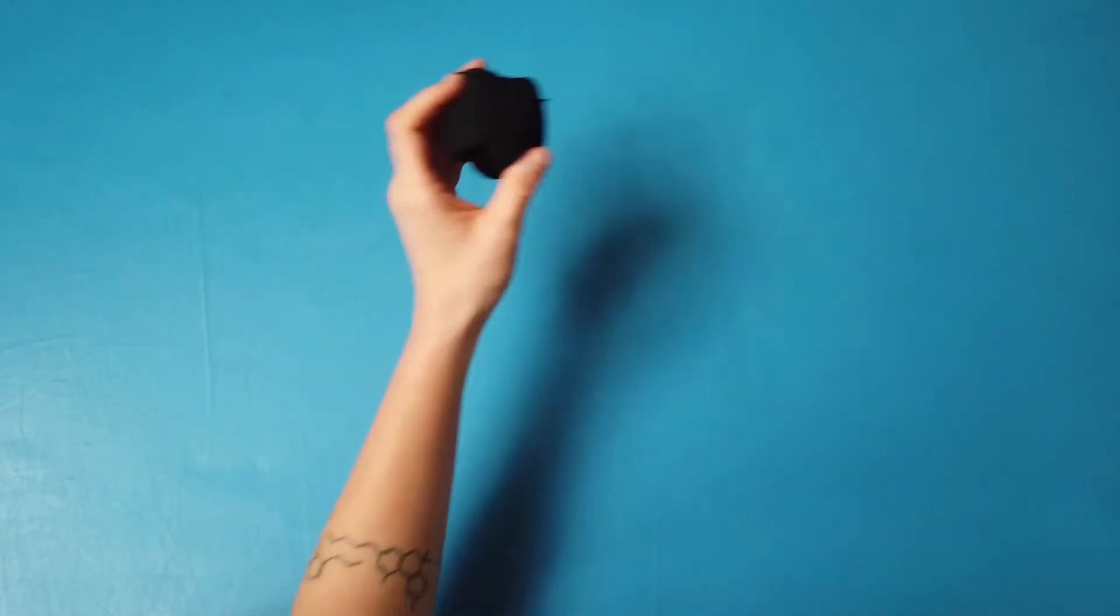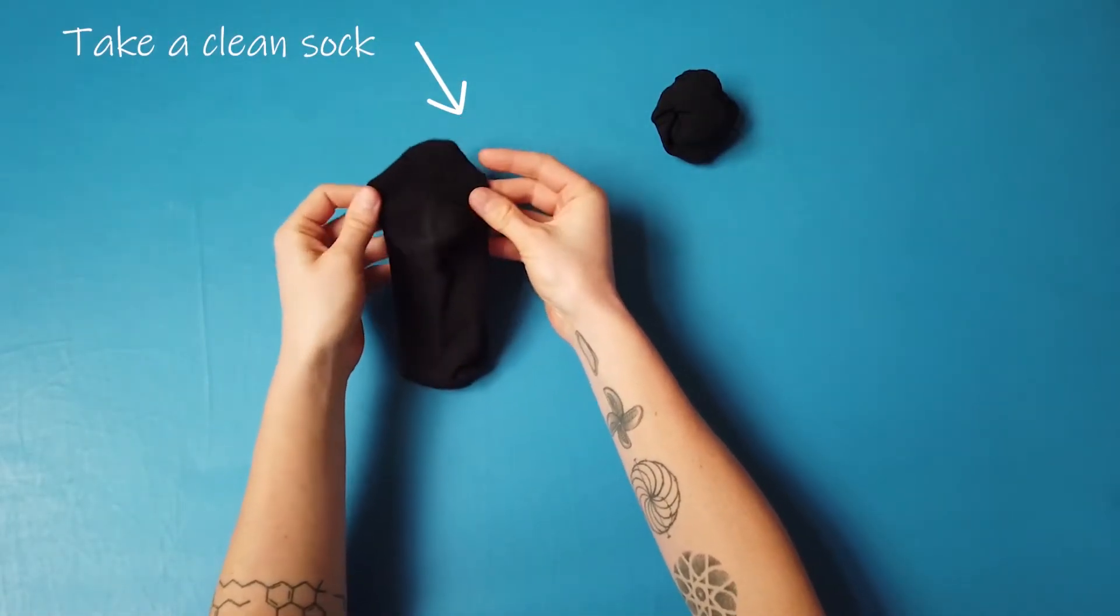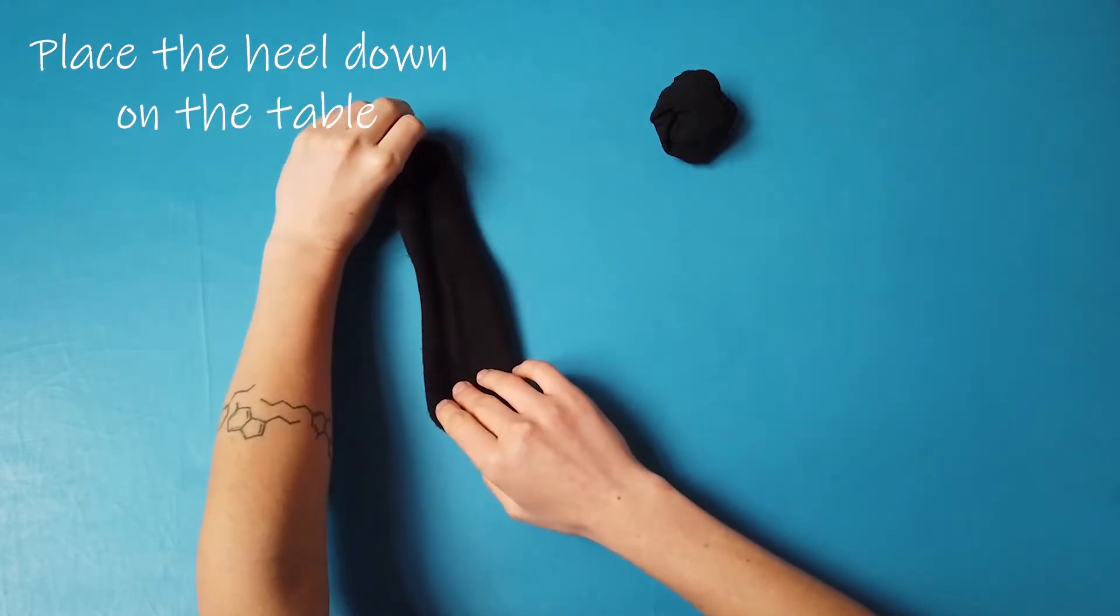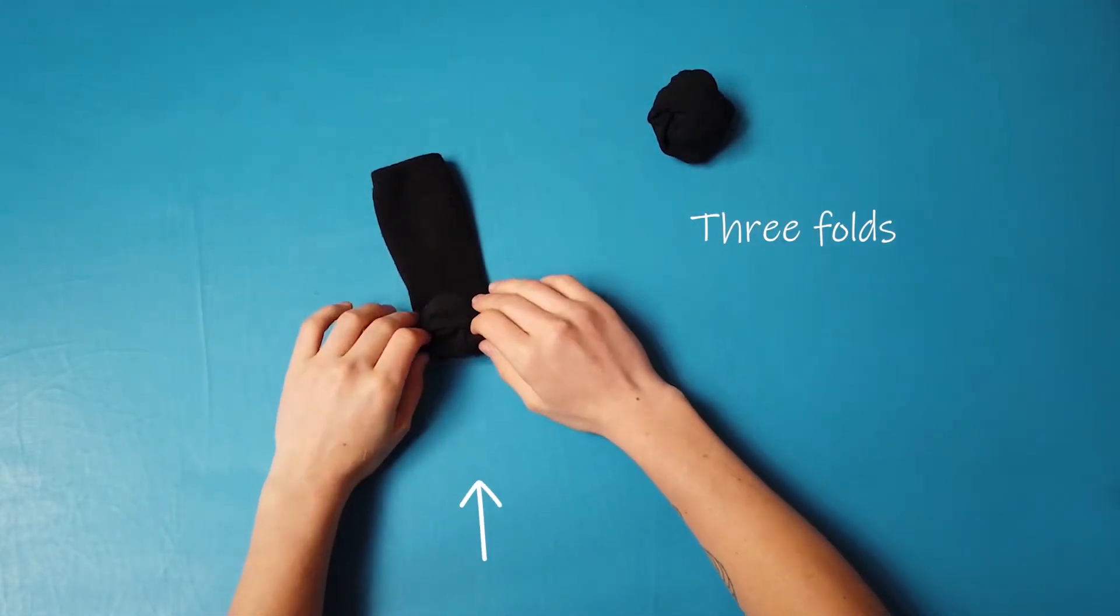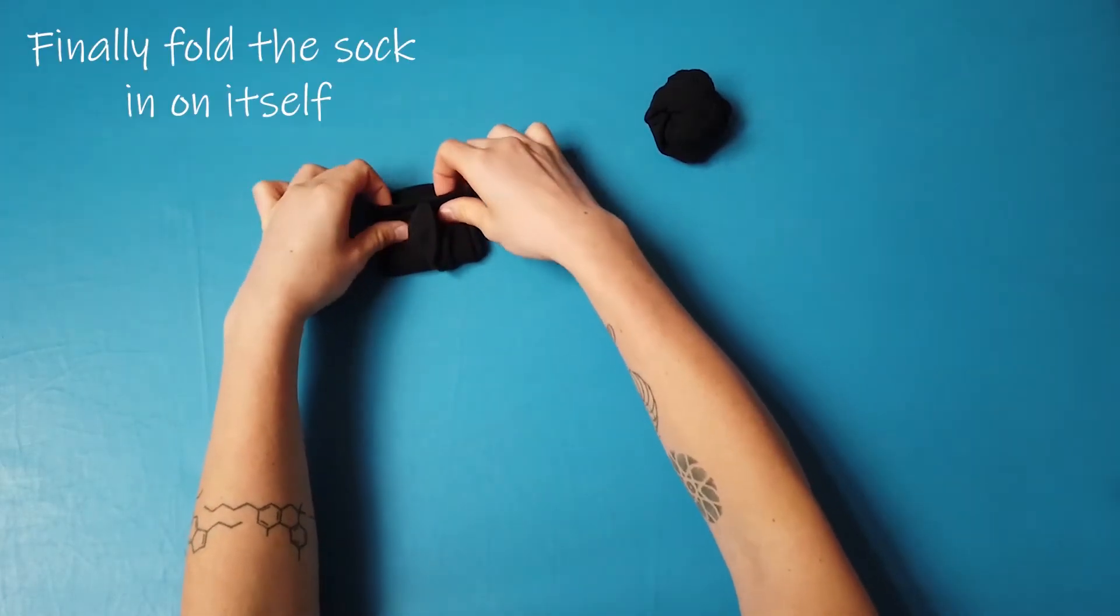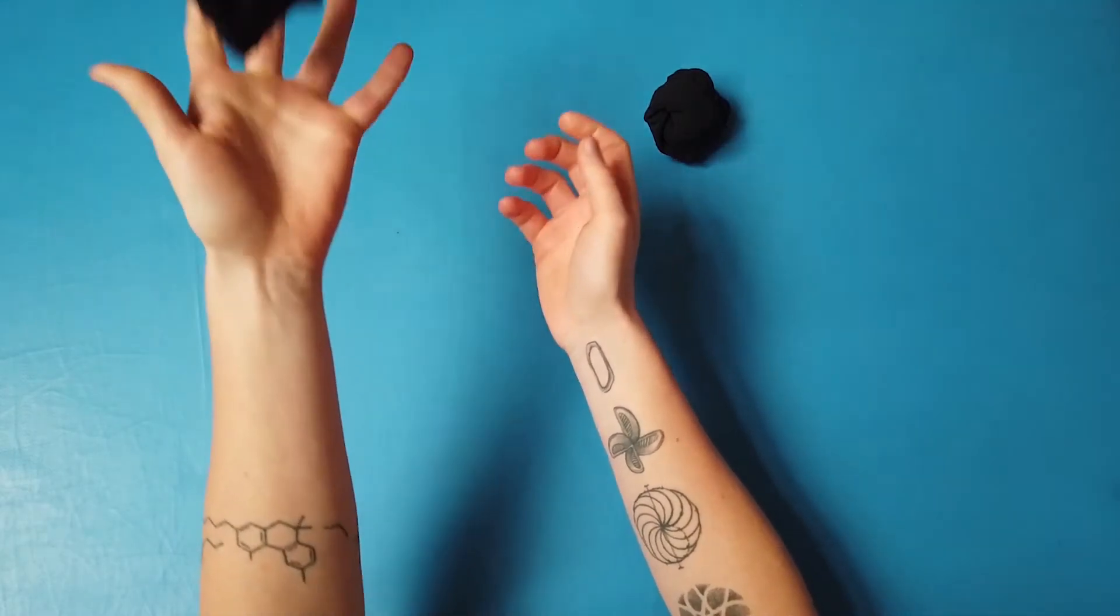So we are going to need one sock. What we're going to do is put the heel on the table and do three folds. So we go one, two, three. And then with this top bit, fold it into itself. And now we have a sock juggling ball.